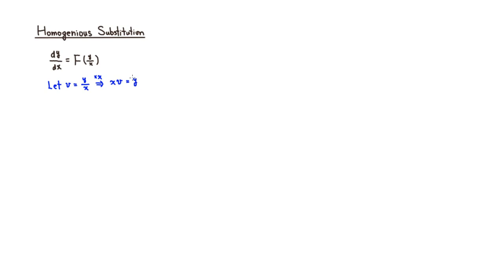Then I'm going to take the derivative. Since it's two things multiplied together, I'm going to use the product rule. So it's going to be derivative of the first, which is 1, times the second, which is v.